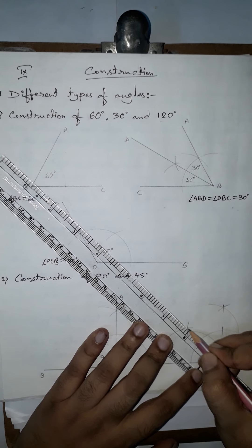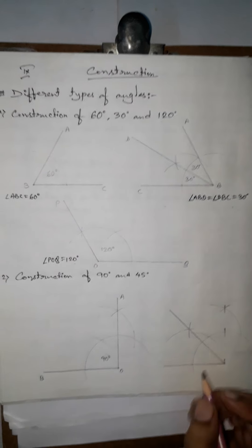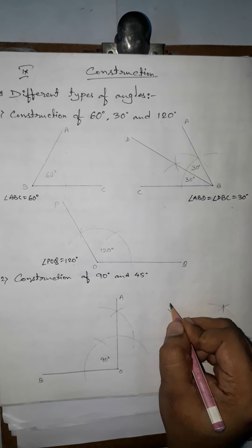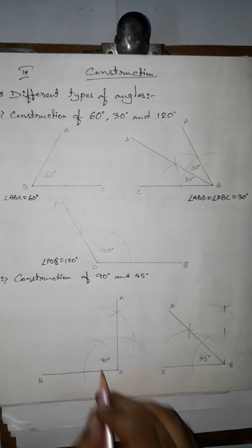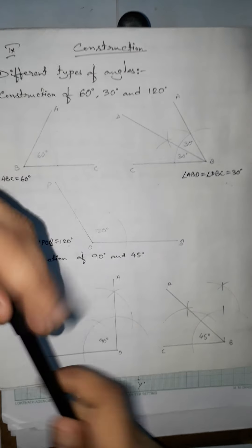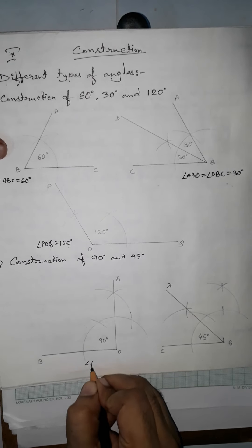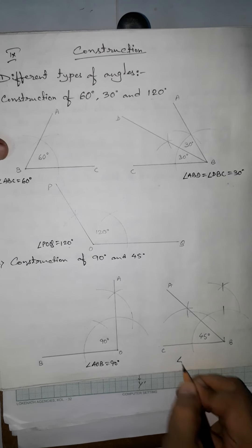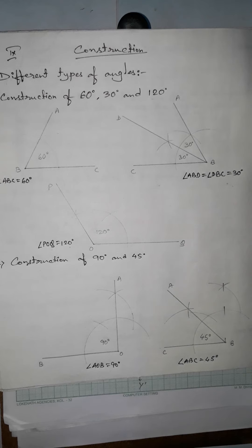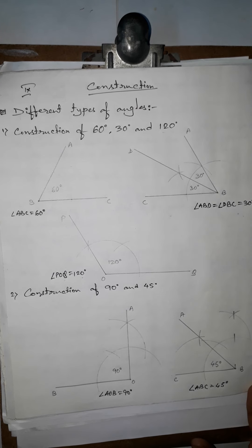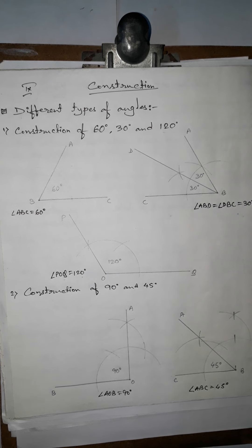Joining the vertex to this new point and extending gives the 45-degree angle, named as angle ABC = 45 degrees. So: angle AOB = 90 degrees and angle ABC = 45 degrees. Names can be anything but must be given in clockwise or anti-clockwise order. In the next video we will see 75 degrees, 105 degrees, 135 degrees and more.